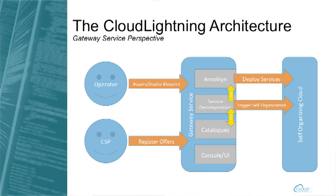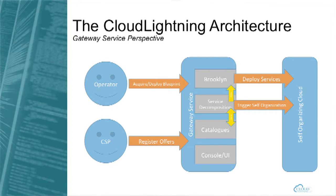The operators deploy registered applications or they can register their own applications to the cloud. As part of the gateway service, we offer several components. One is the console or the user interface used by the cloud service providers and users. The most important component that is directly accessible is the Brooklyn component, used for orchestrating all components — basically bringing applications to life. It speaks with the underlying self-organizing cloud to deploy applications, tie them together, and offer a real solution to the user. We also have our own developed component that will interact with the self-organizing cloud — triggering self-organization, acquiring resources, and passing them to Brooklyn for later orchestration and deployment.